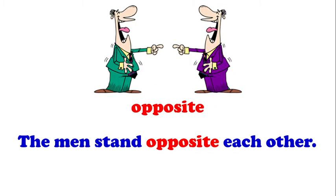Next picture. What can you see in the picture? Very good — two men. They are standing opposite. Opposite. Can you read after me? Opposite. The men stand opposite each other.